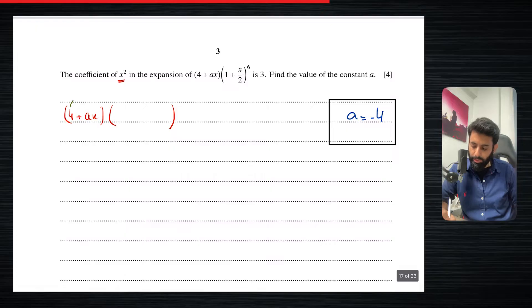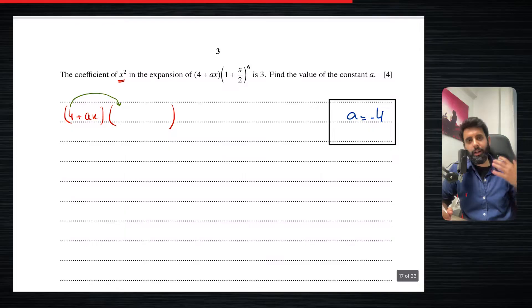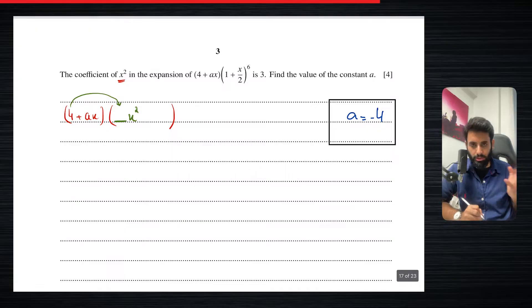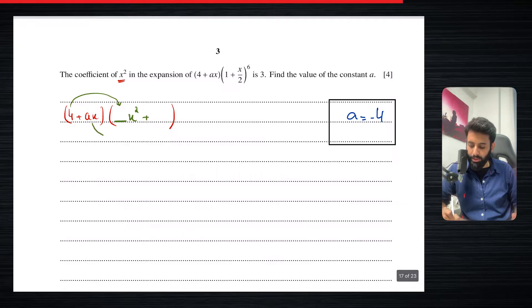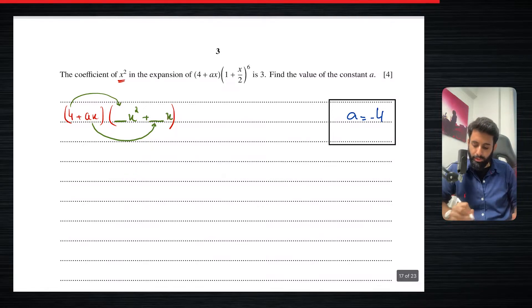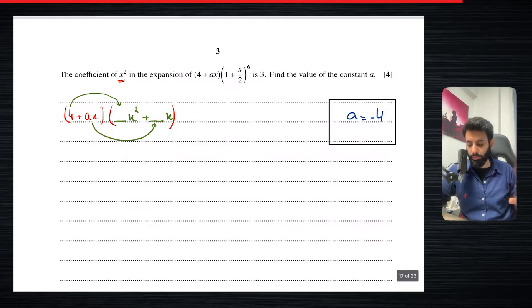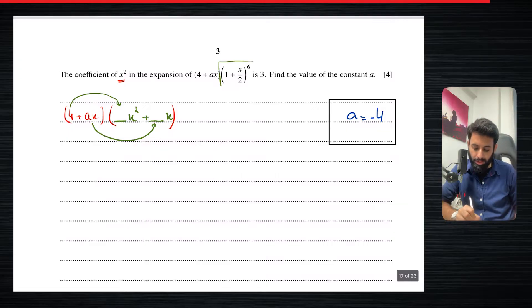So here's what we really want. Starting from the constant 4: since 4 is a constant, if I want to multiply it by something to get x squared at the end, I'm looking for the term with x squared from the expansion. Then for the ax term: I need to multiply ax by whatever has x, so that ax times that term gives x squared — meaning I need the coefficient of x. So we're really looking for the coefficient of x and the coefficient of x squared from the expansion.